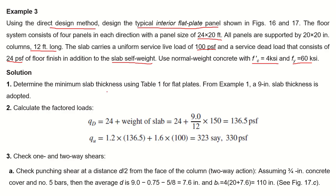The minimum slab thickness was determined in the first video and a 9-inch slab thickness is adopted. The factored dead load qd = 24 psf plus the slab self-weight: 9/12 × 150 = 112.5 pcf, totaling 136 psf. The factored load qu = 1.2 × dead + 1.6 × live = approximately 330 psf.